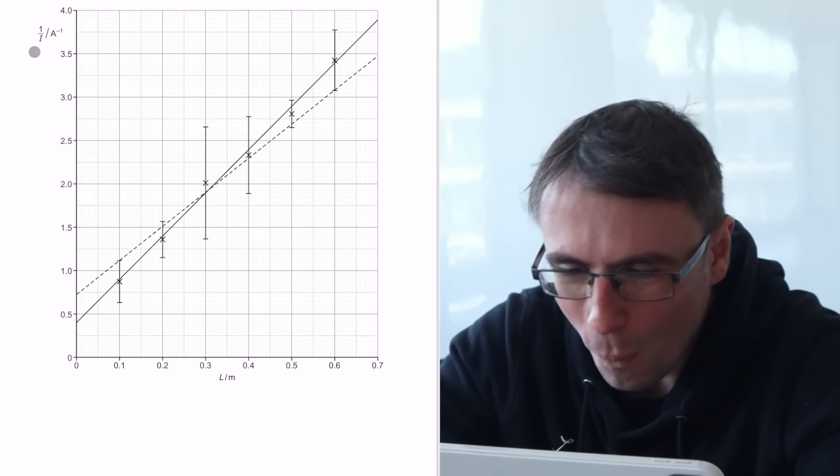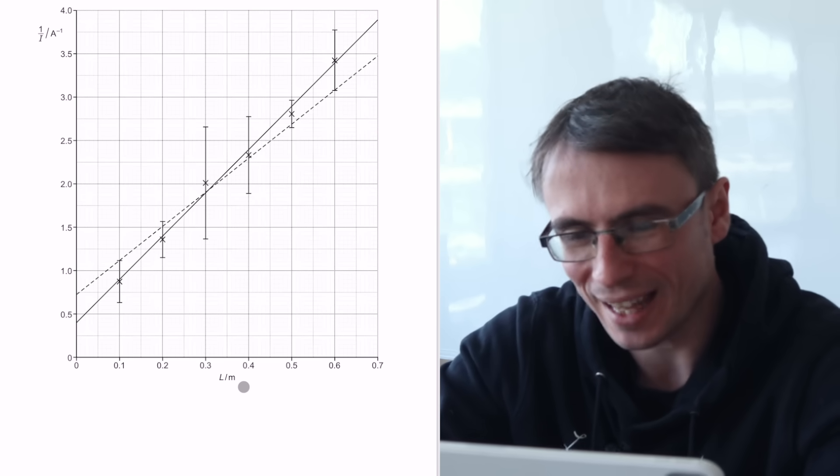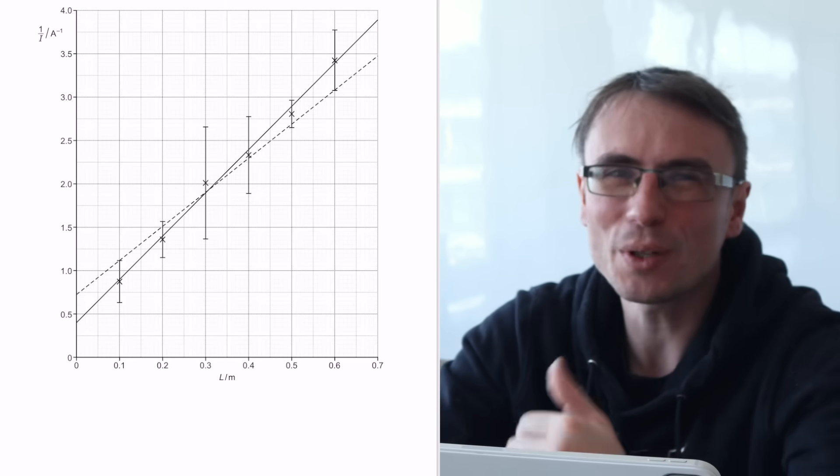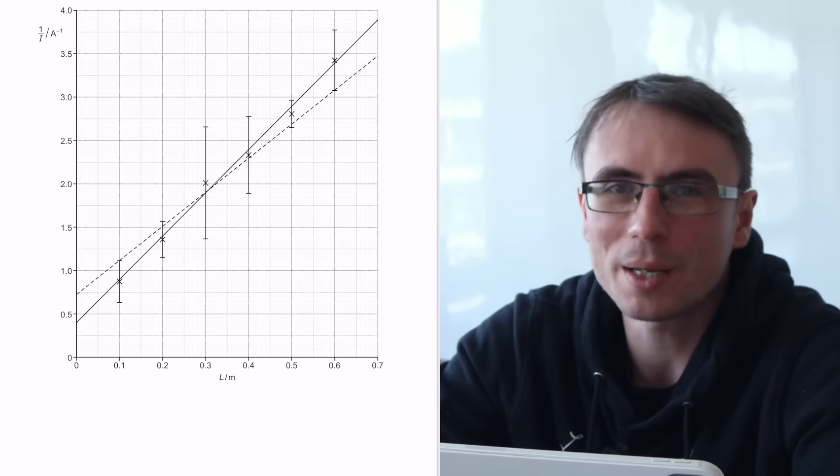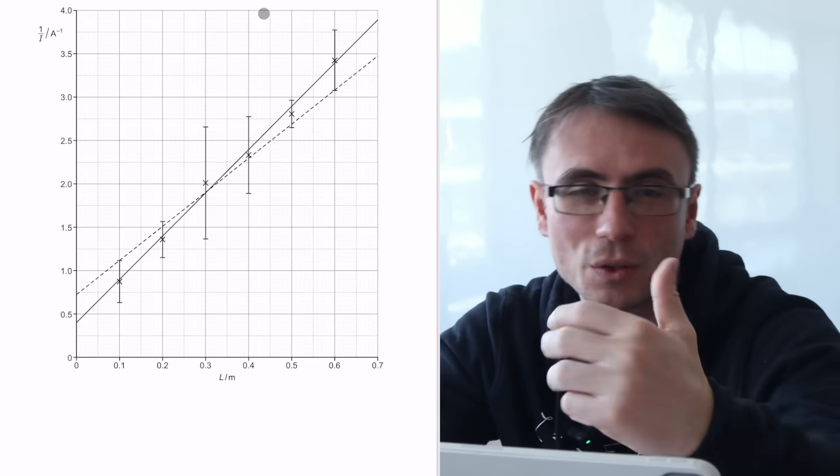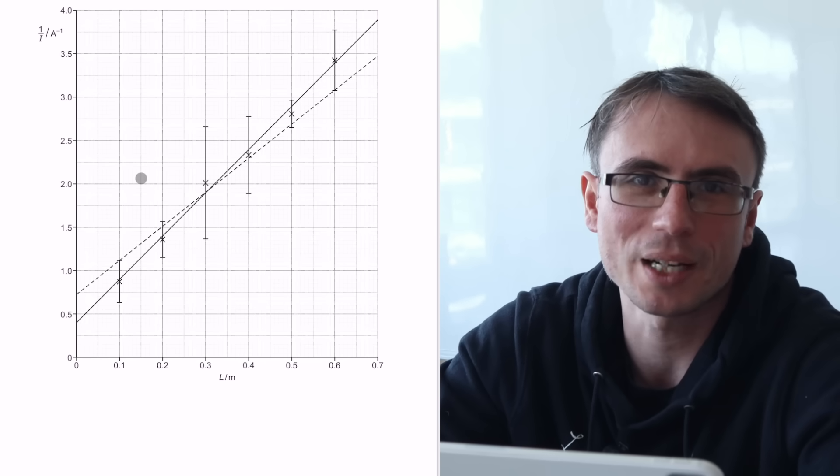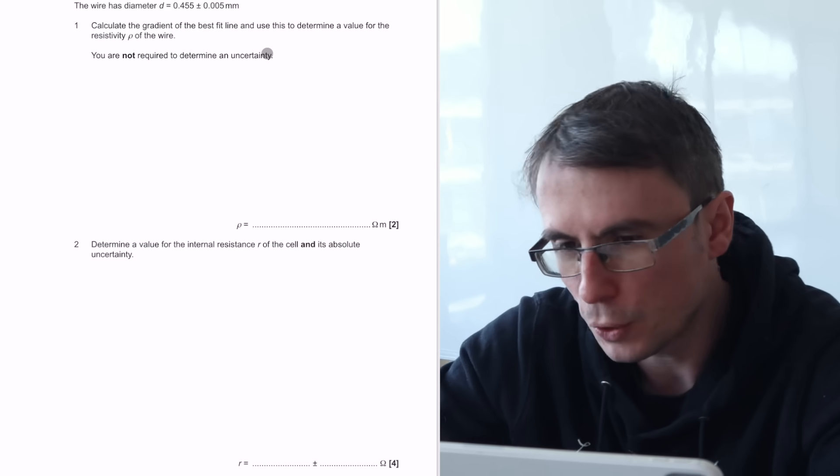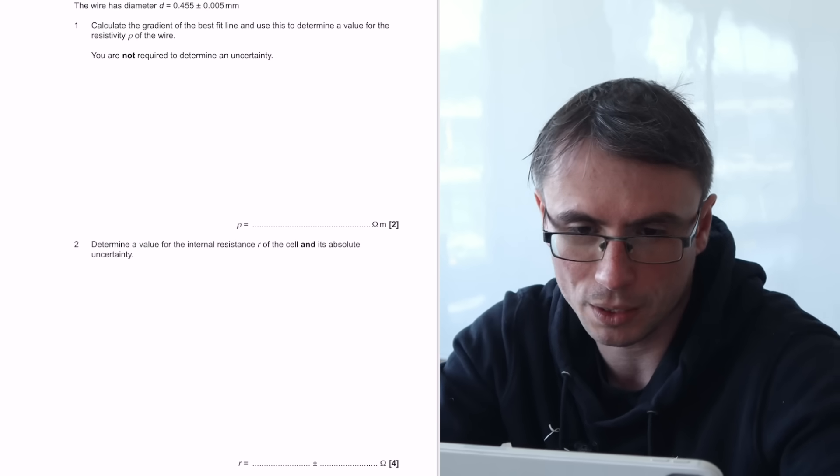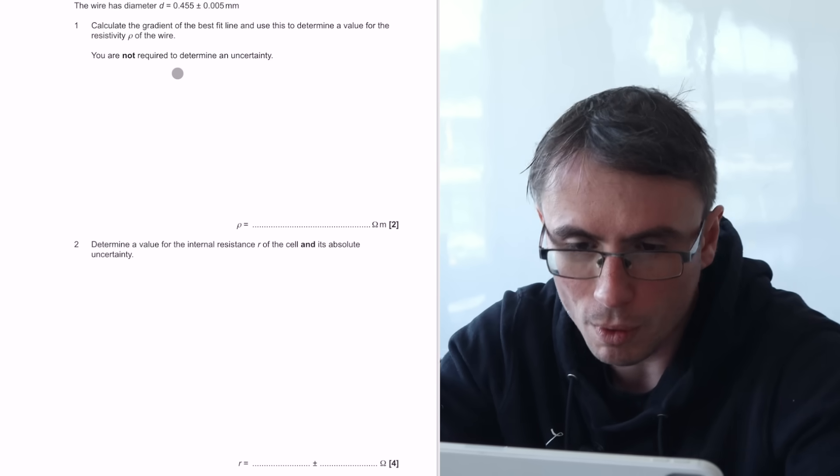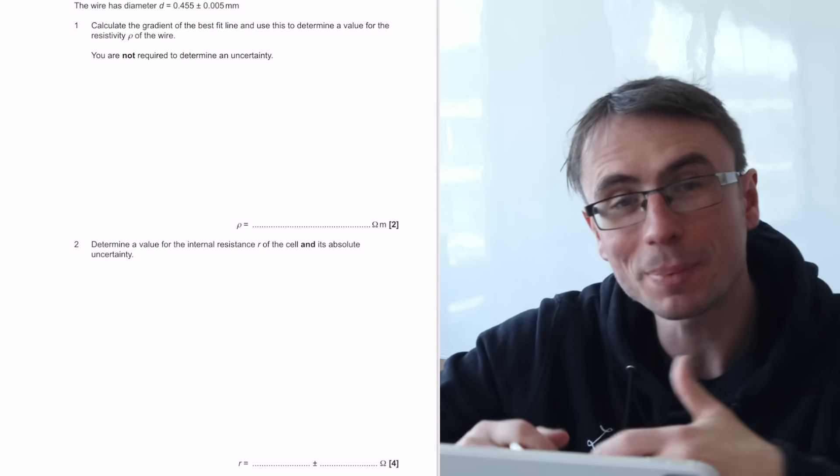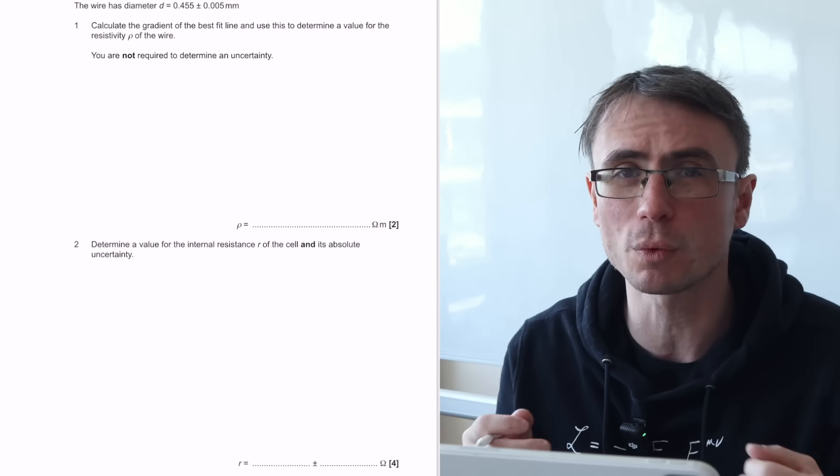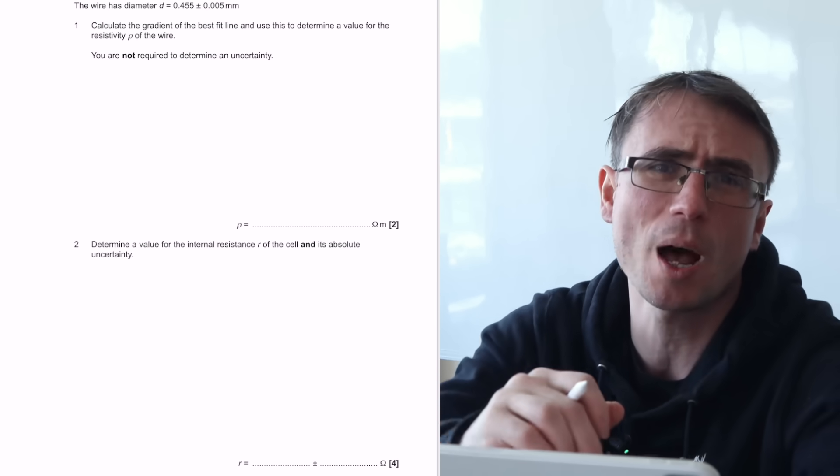Now we've got a graph of 1 over I against the length. And as soon as we see these error bars, we're already thinking about the line of worst fit. If you're doing AQA, you might be calling them the steepest possible gradient, G max and G min, potentially. We're given the value of the EMF, calculate the gradient of the line of best fit and use this to determine a value for the resistivity of the wire. You're not required to determine an uncertainty. Y equals Mx plus C linear analysis is virtually guaranteed to appear in your A levels. It's one of the most fundamental skills. So we should definitely master this.